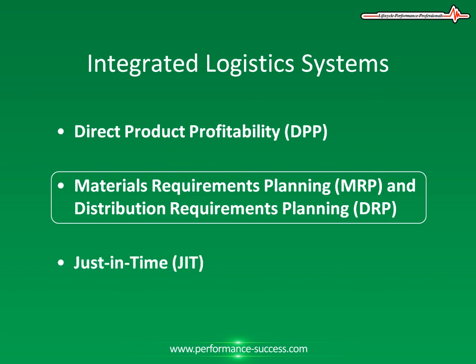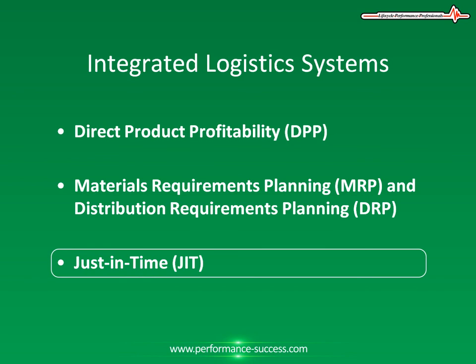Just in Time, or JIT, originated as a new approach to manufacturing and has been successfully applied in many industries such as the automotive industry. It has significant implications for distribution and logistics. The overall concept of JIT is to provide a production system that eliminates all activities that neither add value to the final product nor allow for the continuous flow of material — in simple terms, that eliminates the costly and wasteful elements within a production process.